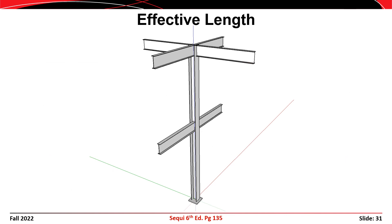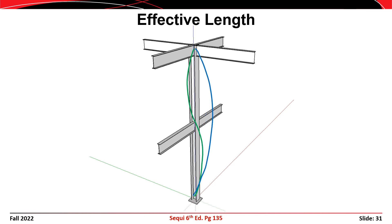Viewing the column in three dimensions, minor axis buckling (drawn in green) and major axis buckling (drawn in blue) would have different buckled shapes. With a major axis effective length of 26 feet and a minor axis effective length of only 13 feet — twice as long — major axis buckling might very well control for this case, even though it's typically the weak axis that governs.